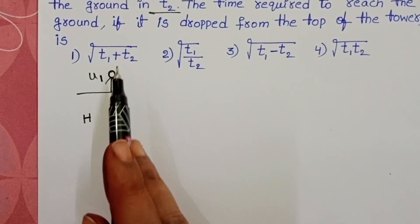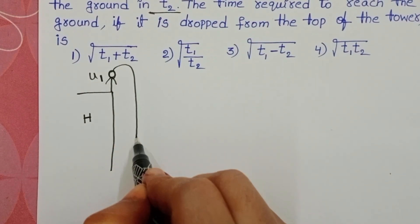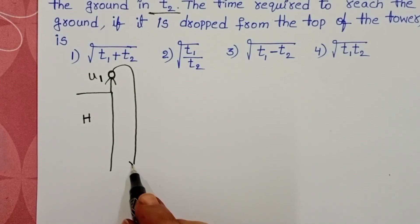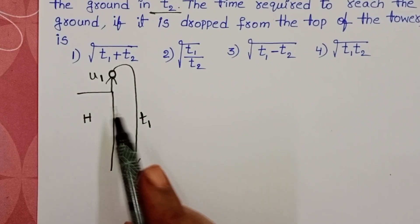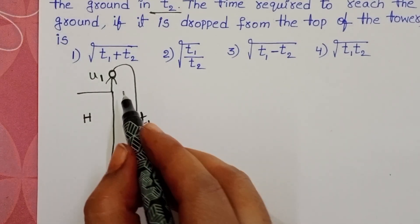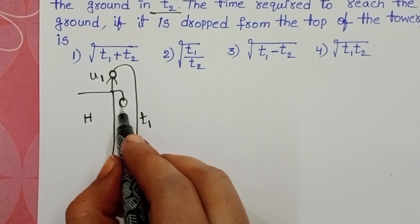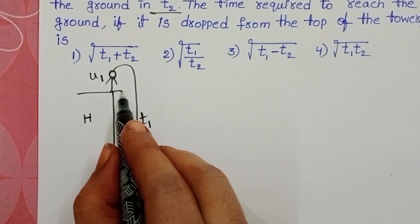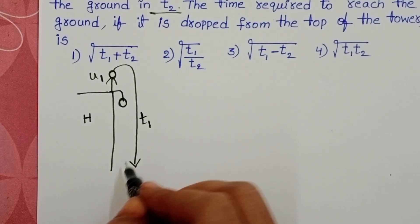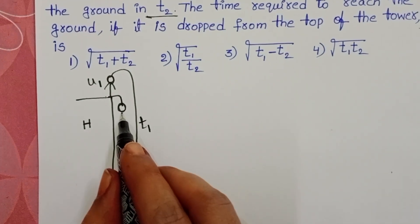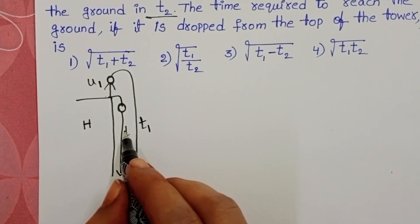The first body is projected in the upward direction and reaches the ground within a time T1. Another body is projected from the same height, but this body is projected in the downward direction — from the same point, with the same speed, but direction is downward. This body reaches the ground within time T2.